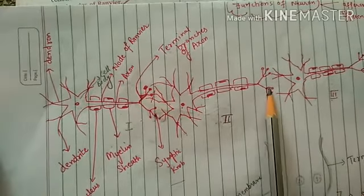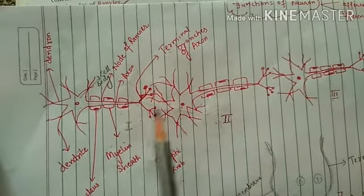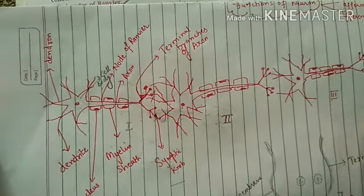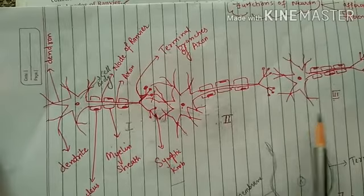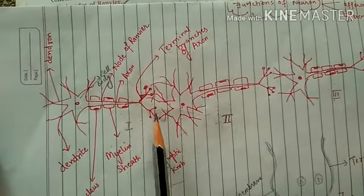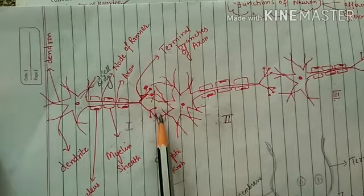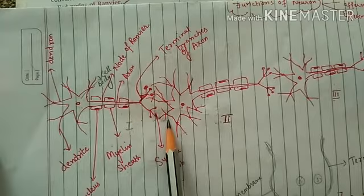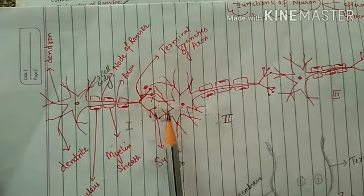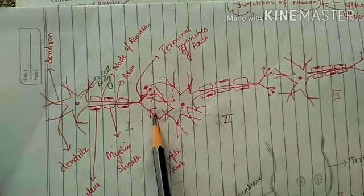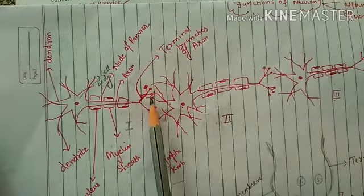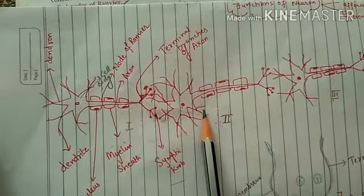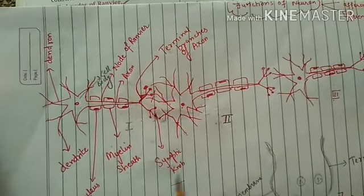This indicates that the message transfers from the first neuron to the second neuron, and from the second neuron to the third neuron, and so on. The message transfers from the synaptic knob to the dendrites of the adjacent neuron. This point of contact between the terminal branches of the first neuron and the dendrites of the adjacent neuron is known as synapse.